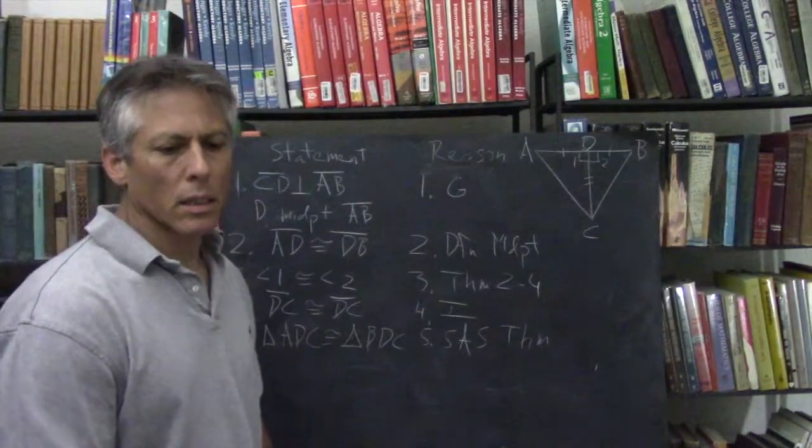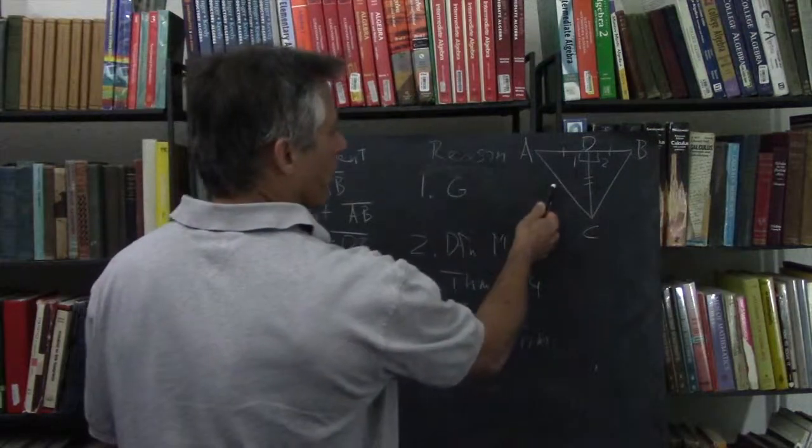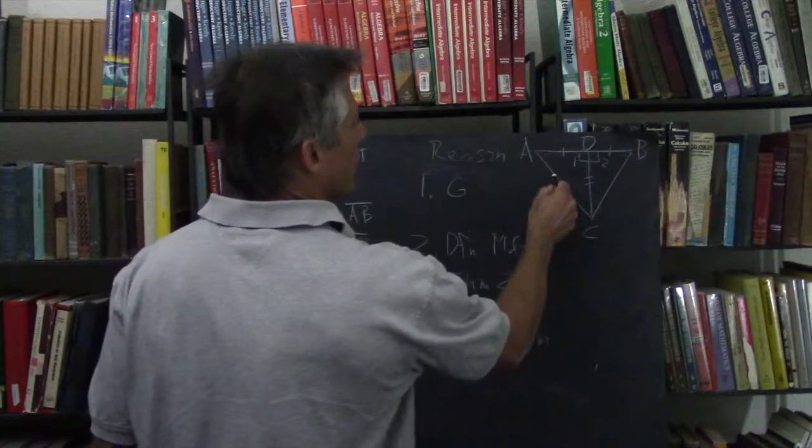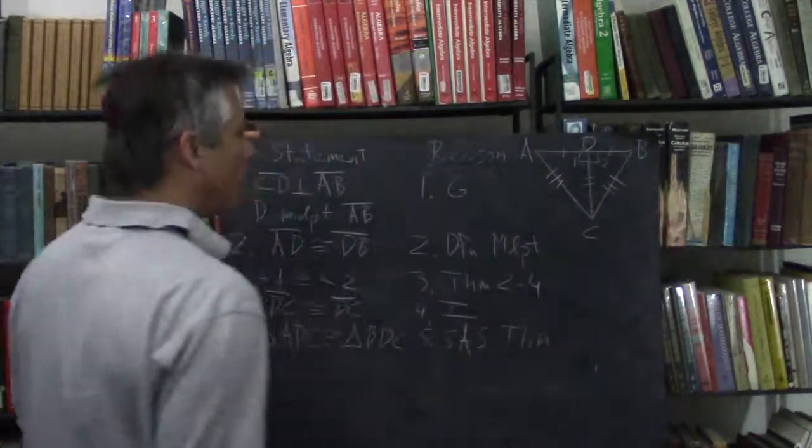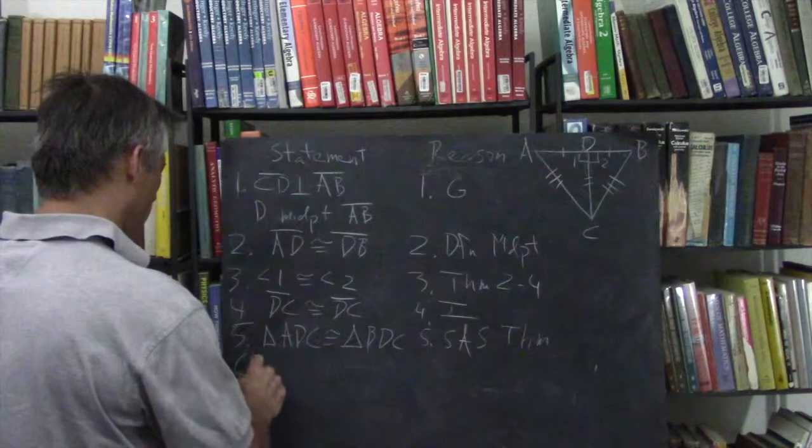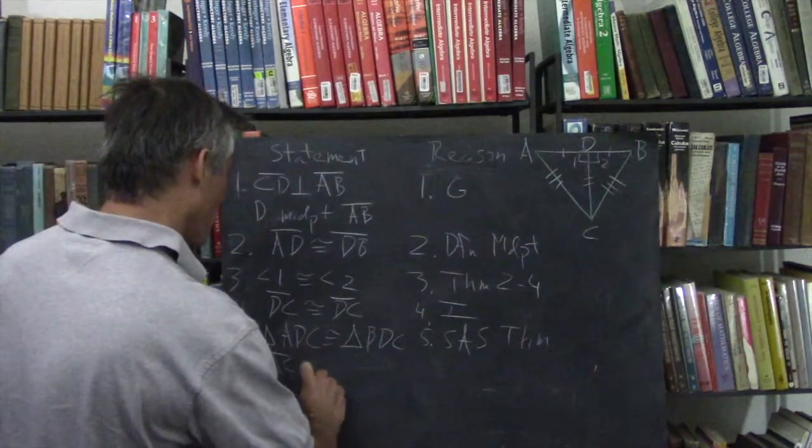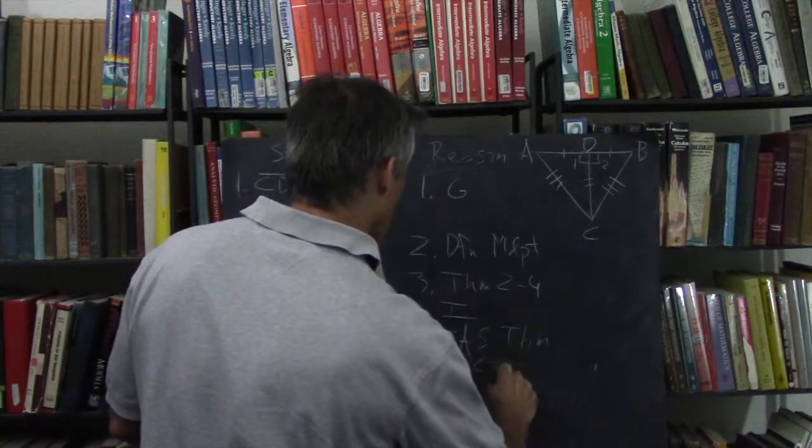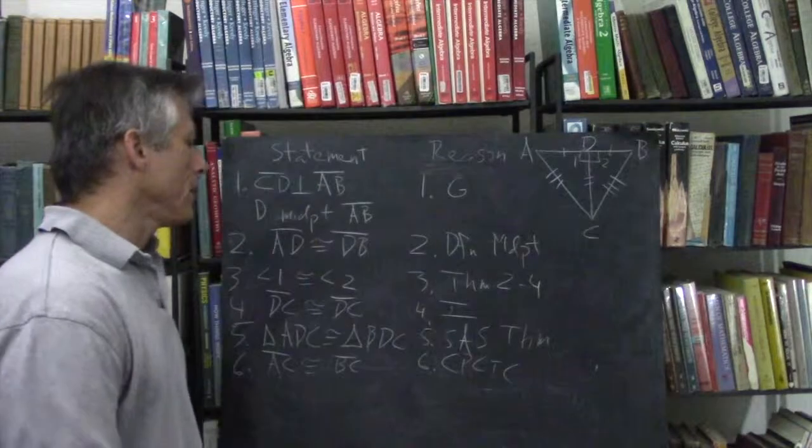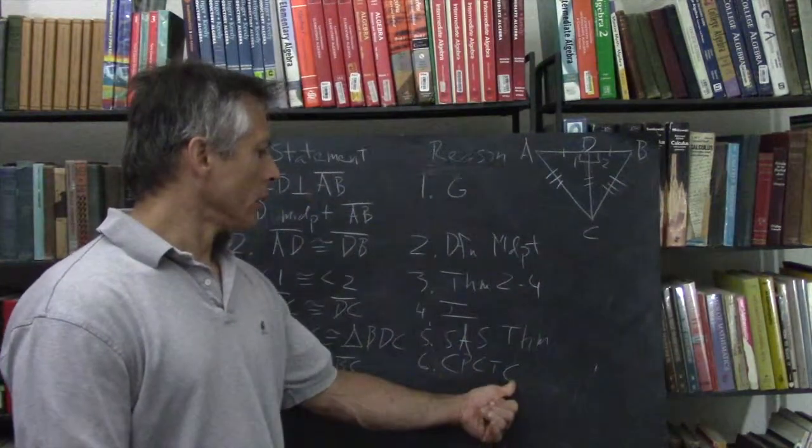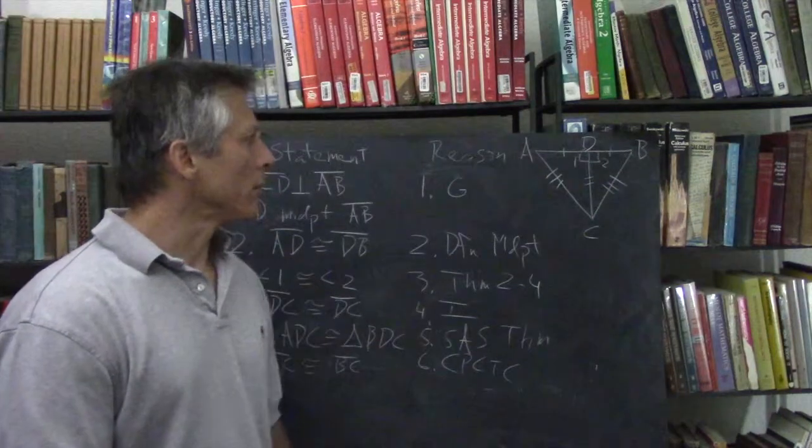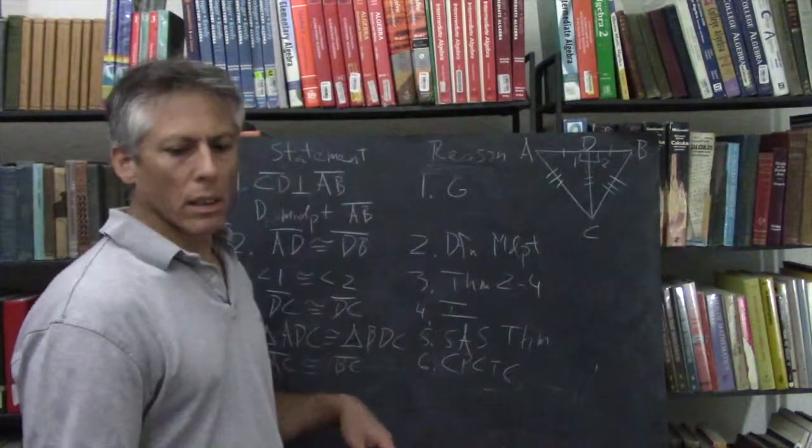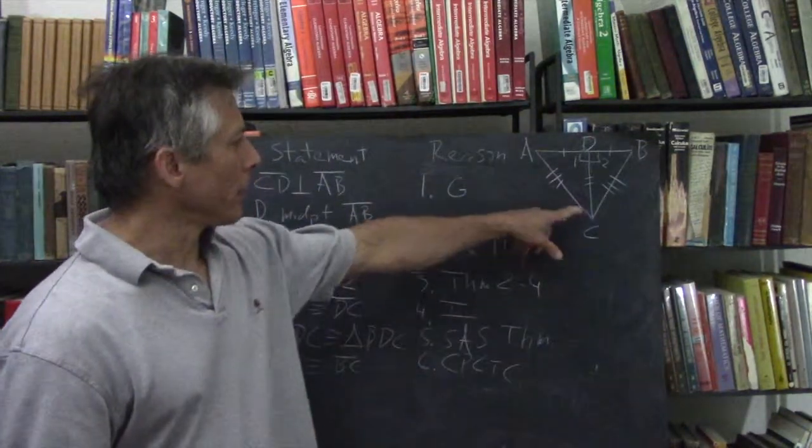And then, because whenever you have congruent triangles, all the corresponding parts are the same, we know AC and BC are congruent. With our famous CPCTC - Parts are congruent when you have congruent triangles. Alright, good. Now, that was number 5. Okay, number 6 is going to be a similar shape, similar figure, but sideways.